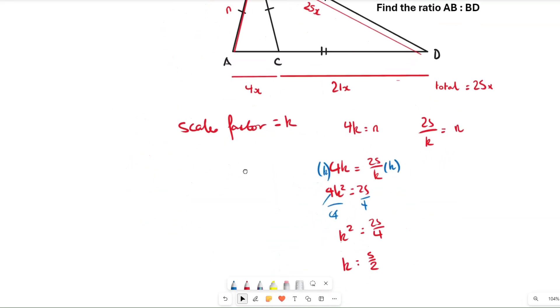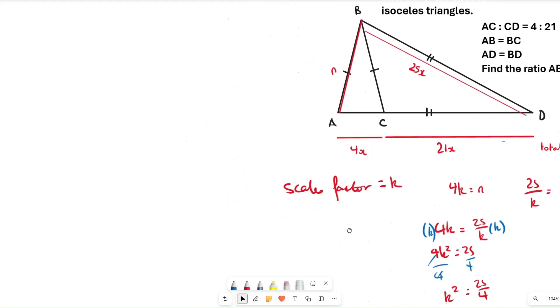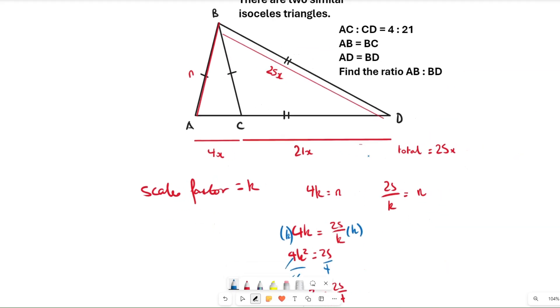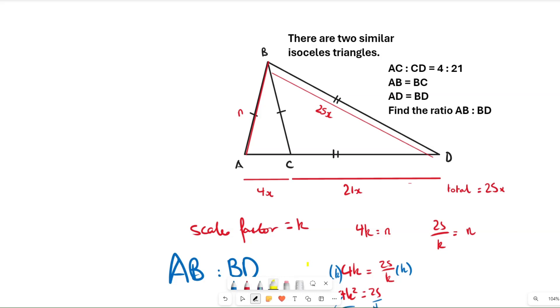So we know what the scale factor is. I'm just going to remind us what we're actually trying to find - we're trying to find AB to BD. I'm going to highlight these just so we don't forget. This one here is AB and this one here is BD.